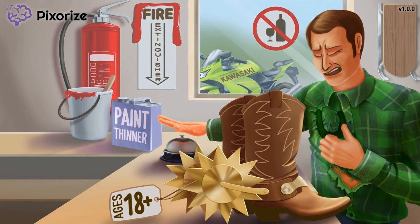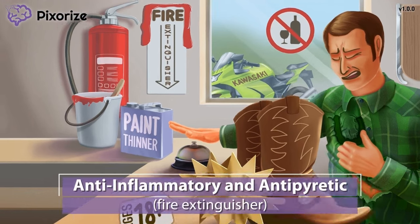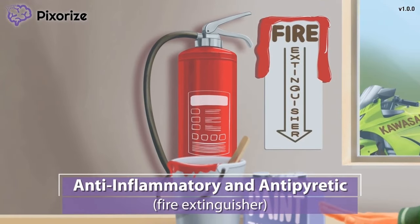Now let's talk about when aspirin is used. Take a look at the fire extinguisher here. Every store has to have a fire extinguisher to comply with safety regulations. At Pixarize, we use a fire extinguisher to symbolize anti-inflammatory drugs, because fire extinguishers are used to put out flames — just like aspirin can be used to put out inflammation. And since flames are hot, a fire extinguisher can also help you remember that aspirin can reduce fevers, formally known as an antipyretic. You've probably heard of people taking aspirin for the occasional headache or toothache, or perhaps someone with arthritis who takes aspirin to reduce inflammation in their joints.